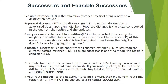The feasible successor is one who meets the feasibility condition (FC). Your route metric to the network, added to the cost to reach me, must be less than my current total metric. If the route metric added to the cost to reach me is more than my current total metric, I will not include you as a feasible successor.